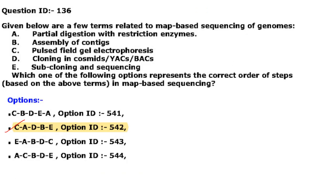Next question: given below are few terms related to map-based sequencing of genomes. Which one of the following options represents the correct order of steps? First will be pulse field gel electrophoresis (C) for isolation of DNA, then partial digestion with restriction enzymes (A), then cloning in cosmids, YACs, or BACs, then assembly of contigs, then sub-cloning and sequencing. The sequence will be C-A-D-B-E, option 2.